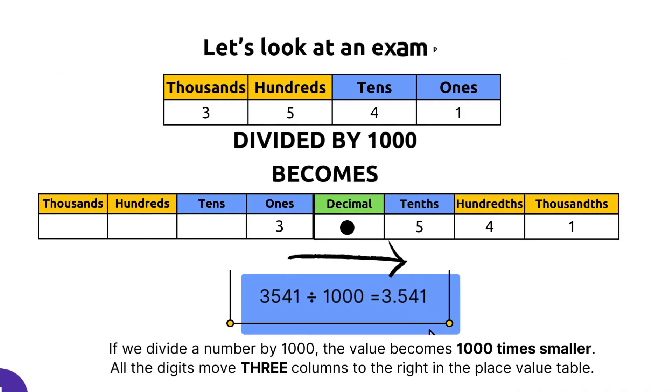And finally now we have another multiple of 10, this time 1000. So now we have 3541 divided by 1000, which gives us the decimal 3.541. The numbers have moved three times to the right.